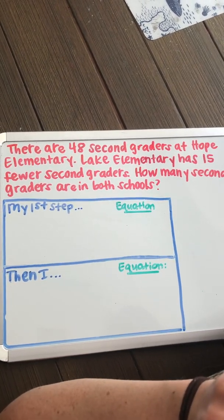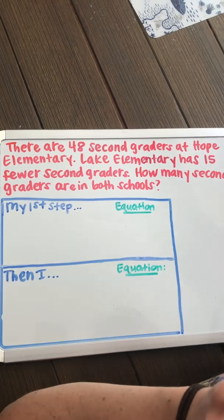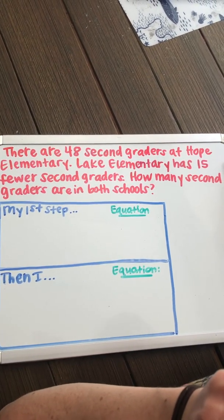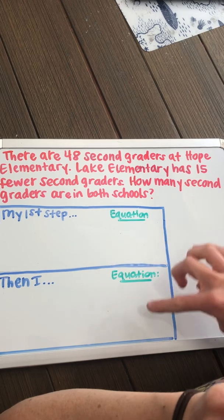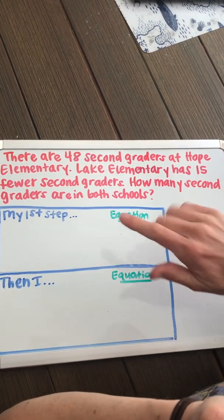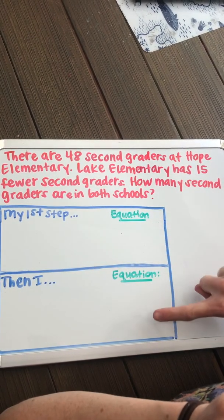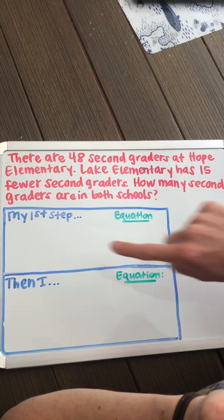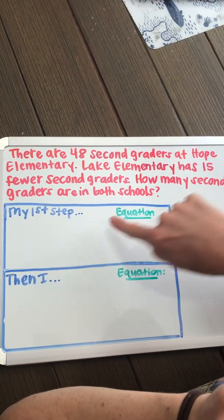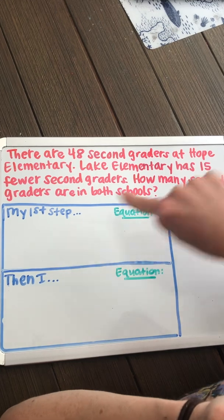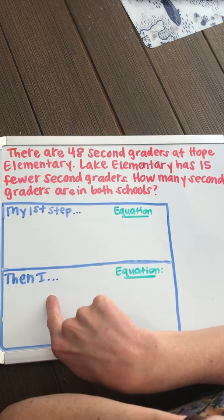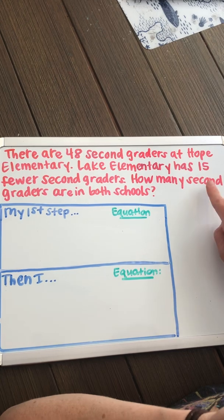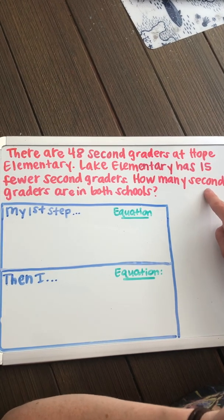Yesterday, we used a three-read strategy. You can use a three-read strategy on two-step problems as well. But today, we're going to focus on using an organizer to help keep your first step and your second step separate. We're going to think about our first step, represent it with an equation, then think about our second step and represent it as an equation. Our second step should be able to answer our final question.